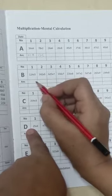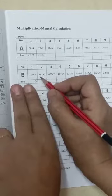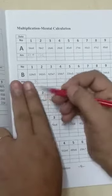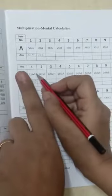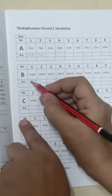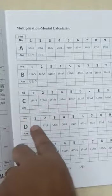So 5 fours are 20. So 0, 2 carry forward. 5 twos are 10, 10 plus 2 is 12. So 2, 1 carry forward. 5 ones are 5 plus 1 is 6. So 620 is your answer.